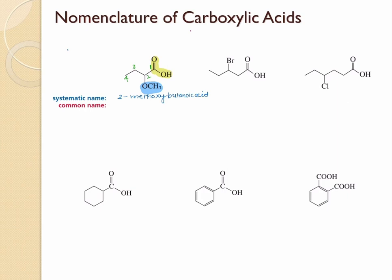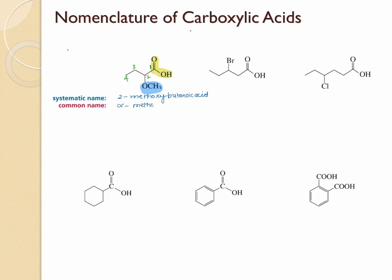For the common name, we use Greek letters for the position of substitution. This methoxy group is present at the alpha position — the carbon next to the functional group. So you write this as alpha-methoxy, and instead of butanoic acid you use butyric acid, giving alpha-methoxybutyric acid.